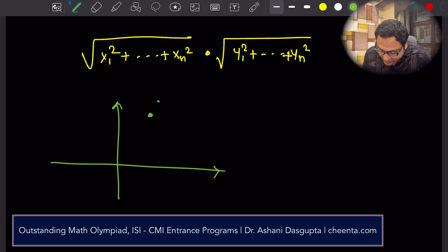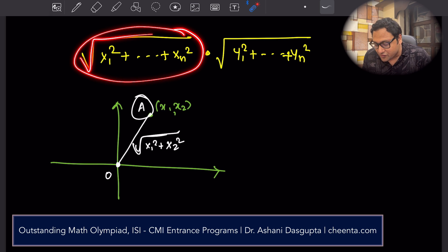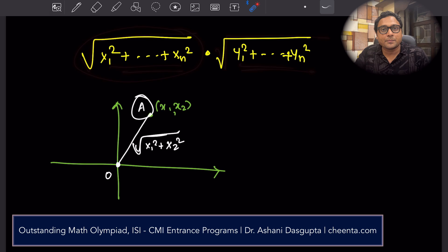Then the distance of this point from the origin by Pythagoras theorem is x1 square plus x2 square square root. This is the magnitude of this point A, its distance from the origin. That's what I have written. This is the magnitude of the first point. This is the magnitude of the second point. We take their product.